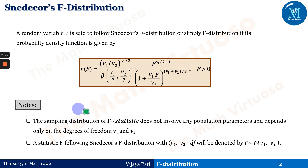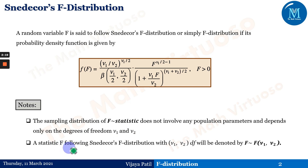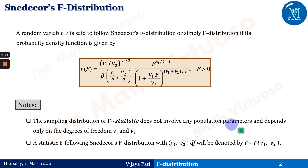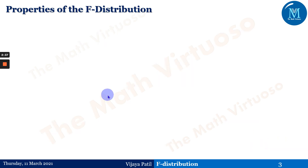Note that the sampling distribution of the F-statistic does not involve any population parameters and depends only on the degrees of freedom ν₁ and ν₂. The statistic F following the F-distribution with ν₁ and ν₂ degrees of freedom will be denoted as F ~ F(ν₁, ν₂). So in the F-distribution, ν₁ and ν₂ are the parameters of the distribution.